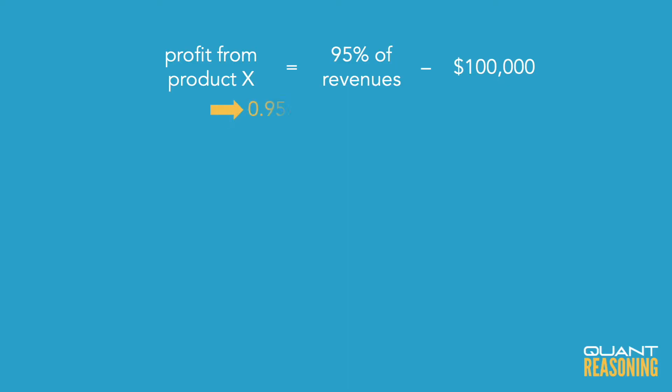So 95% of revenues minus $100,000 is the profit. We were told in the free info that they did make a profit, so I can say that 0.95R minus $100,000 is greater than 0. If I add $100,000 to both sides, 0.95R is greater than $100,000.